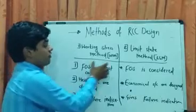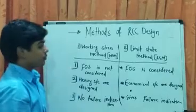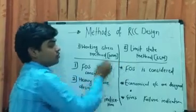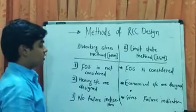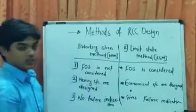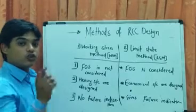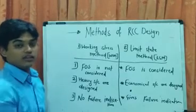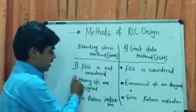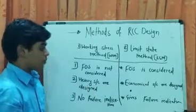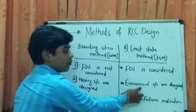In the methods of RC design, we have two methods: working stress method and limit state method. WSM is outdated, but LSM is very popular nowadays among engineers. In WSM, the factor of safety is not considered, but in limit state method, it is considered. Factor of safety means we increase the loads by some multiplier. By the WSM method, the sections we design are very heavy and uneconomical. But in the limit state method, we can design economical sections.